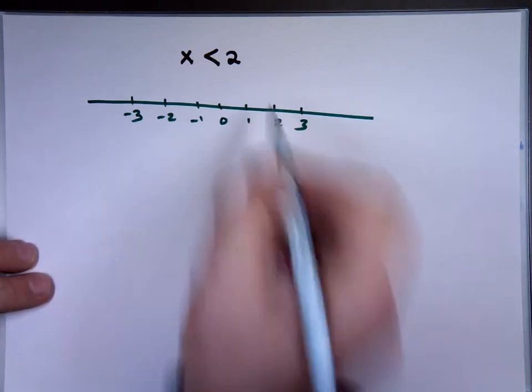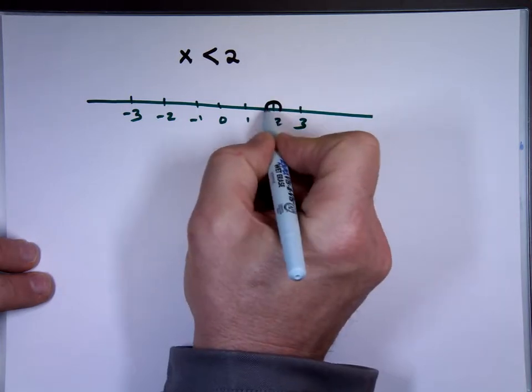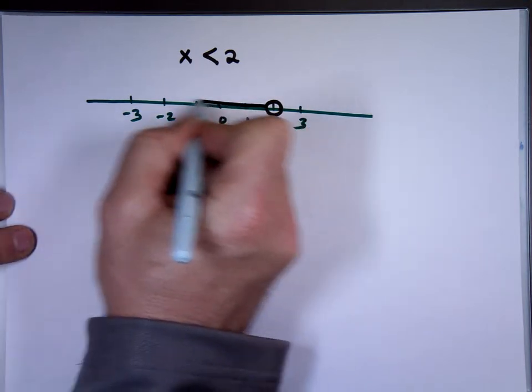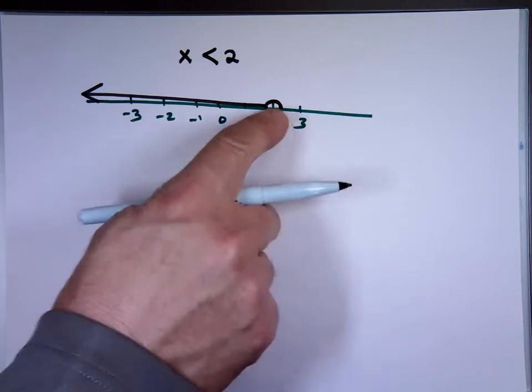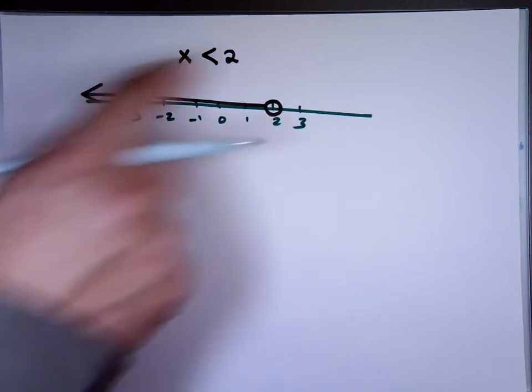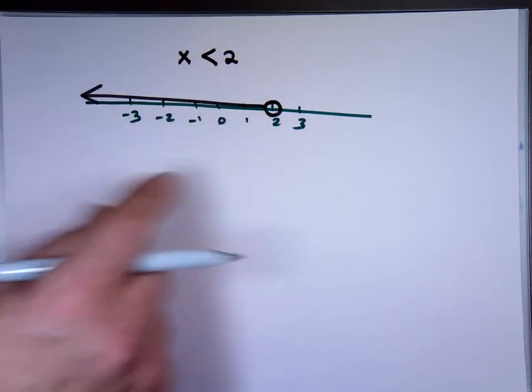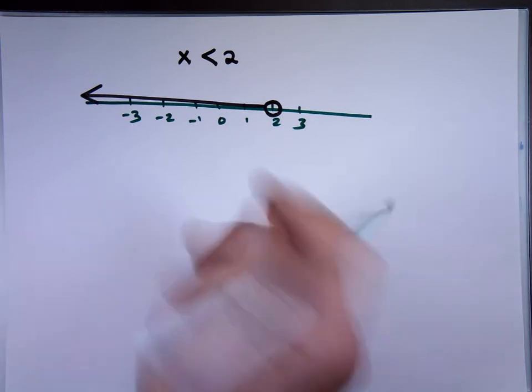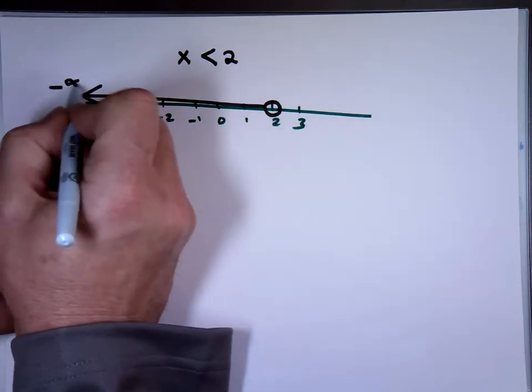Is the 2 included? No. So it's an open circle, which means not included. And less than is always to the left. So from this point all the way down, that's what the answer is. 1 is a solution, 0 is a solution, minus 1 is a solution, 1.5 is a solution. That's why you can't say 1 or 2 or 0 or negative 1. You have to tell me all the points.